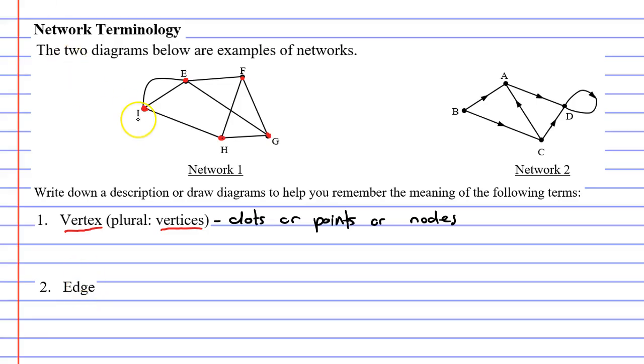Now moving on to the word edge. The edges are basically the lines that connect the vertices. We can see an edge joining E to F. We can also see an edge that joins D back to itself. We'll talk about this edge a little later.